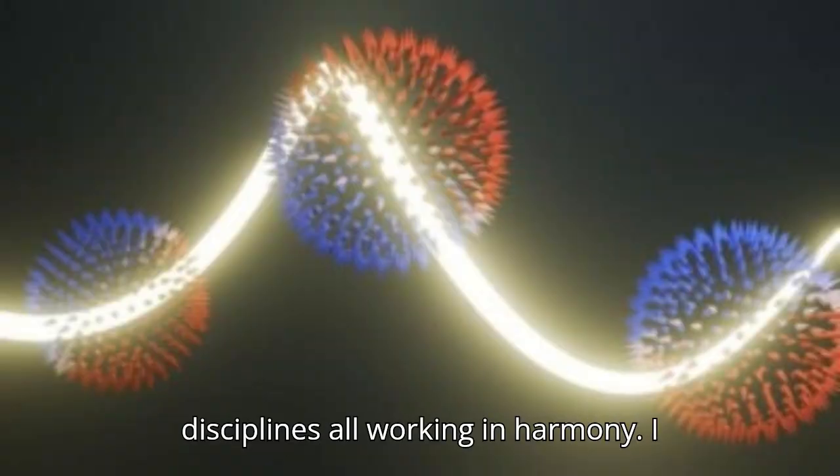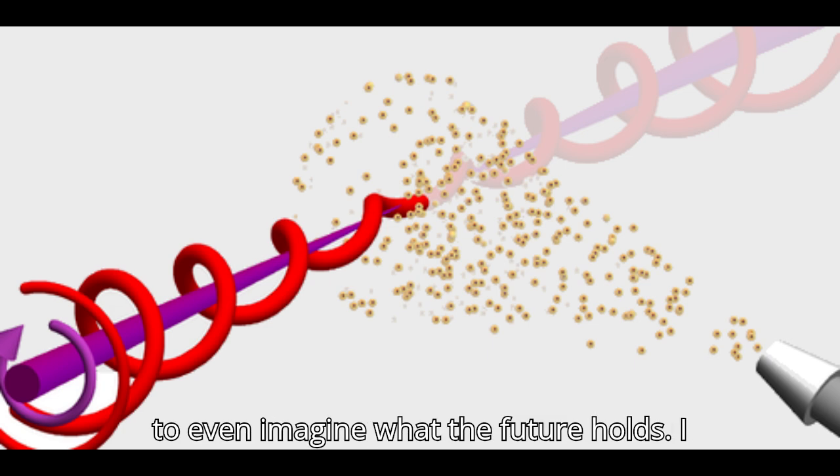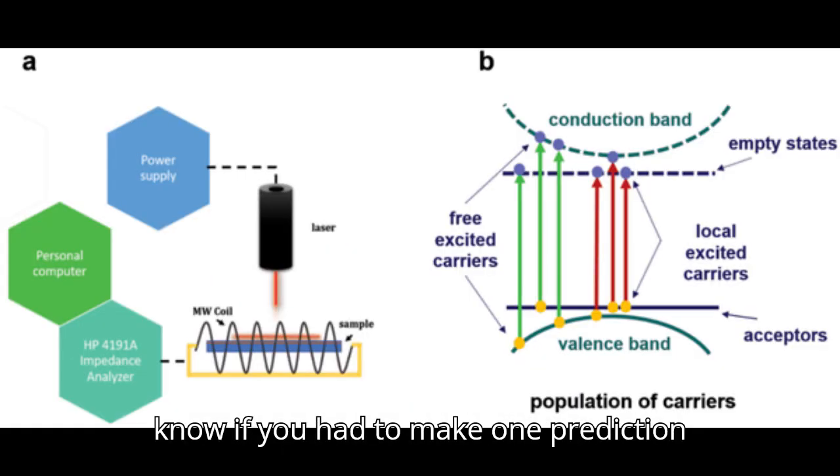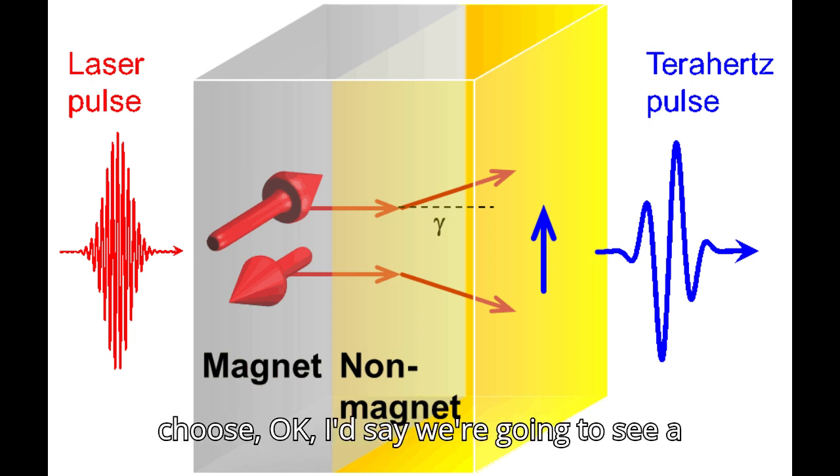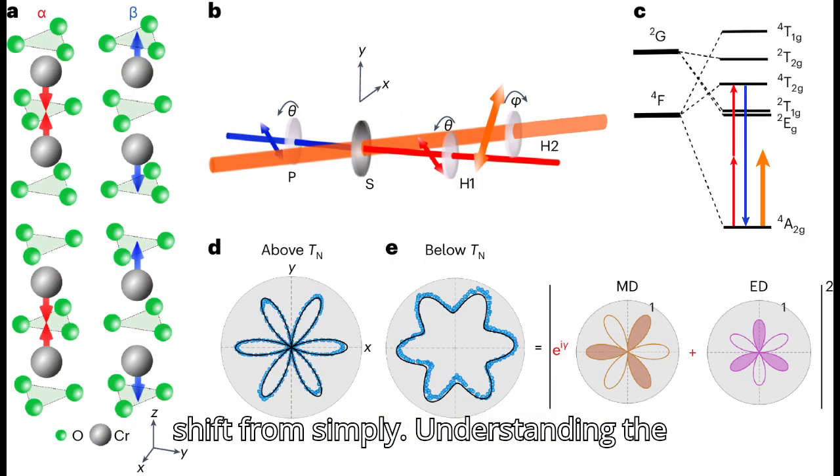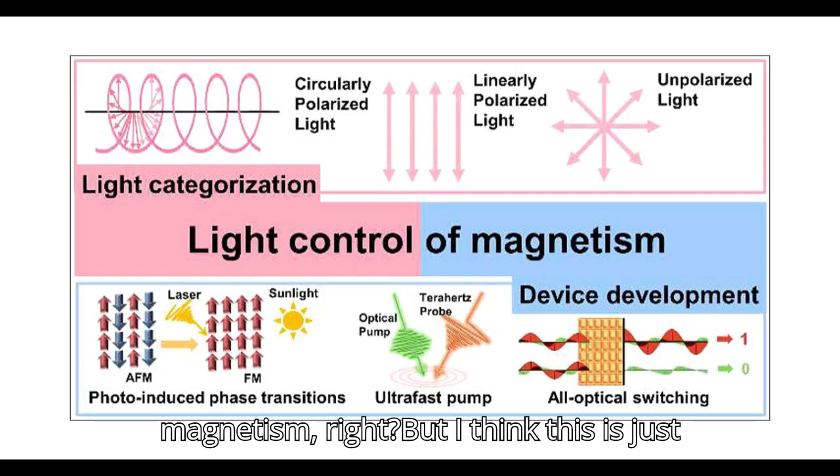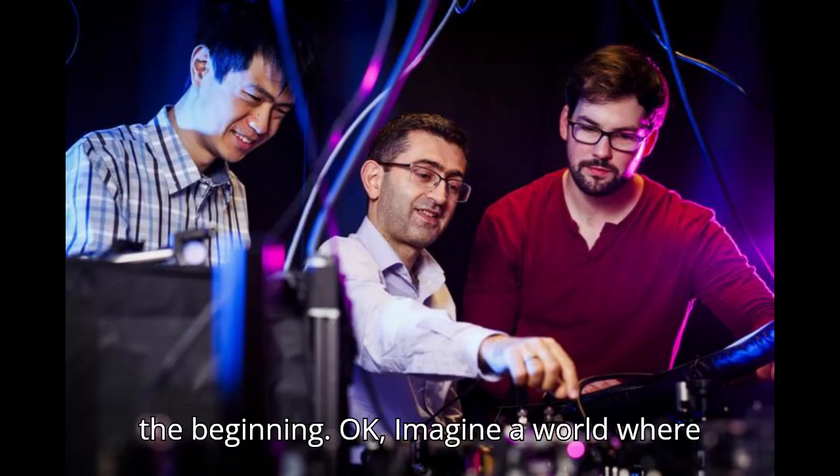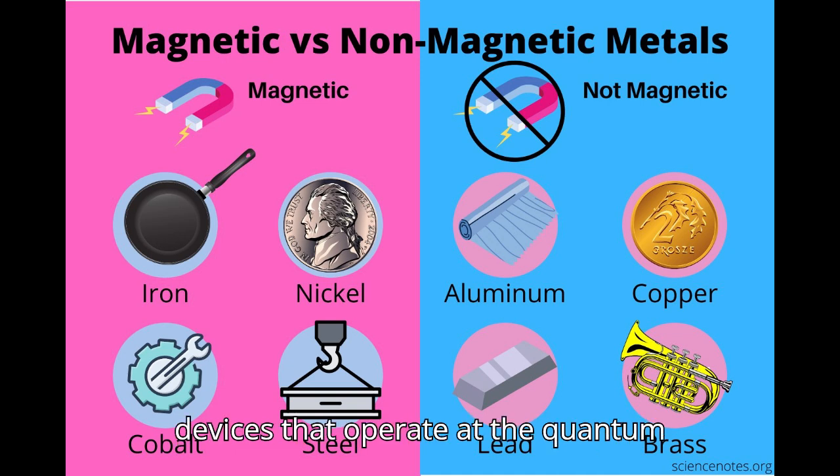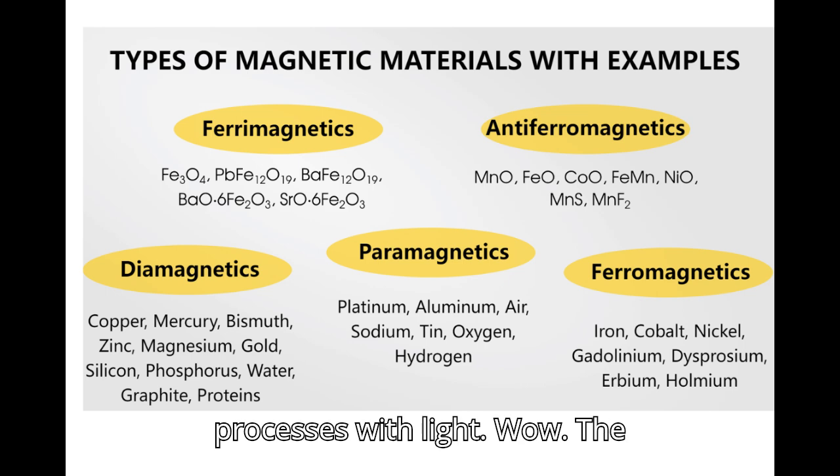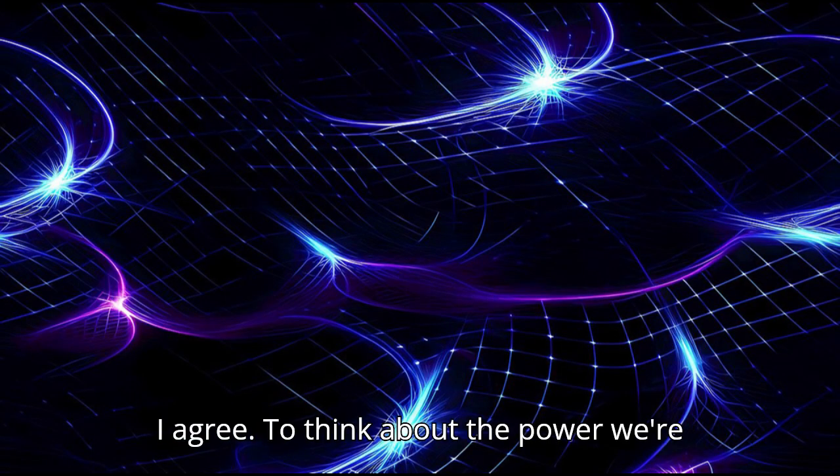A symphony of scientific disciplines all working in harmony. That's a powerful image. But with so many possibilities, it's hard to even imagine what the future holds. If you had to make one prediction about the future of light induced magnetism, what would it be? That's a tough one. But if I had to choose, I'd say we're going to see a shift from simply understanding the universe to actively shaping it at the atomic level. We're already seeing hints of this with light induced magnetism, but I think this is just the beginning. Imagine a world where we can design materials with specific properties on demand, create devices that operate at the quantum level, or even manipulate biological processes with light. The possibilities are truly limitless.